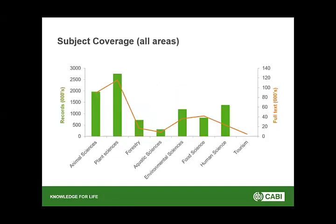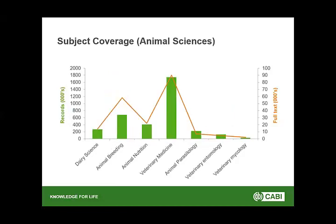These are the subjects we cover in our content development and information: animal sciences, plant sciences, forestry, aquatic sciences, environmental sciences, food sciences, human sciences, and tourism. Each major subject has sub-subjects — for animal science you could see dairy sciences, animal nutrition, veterinary, mycology, and so on.